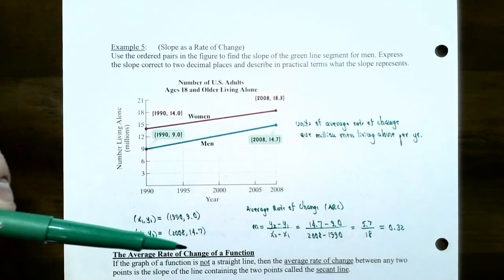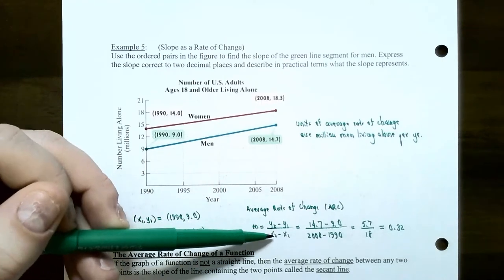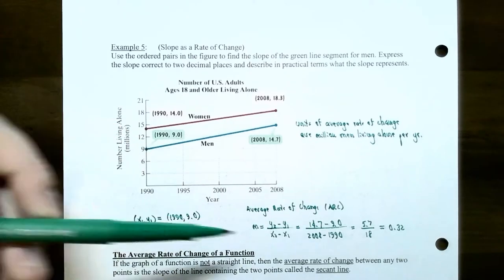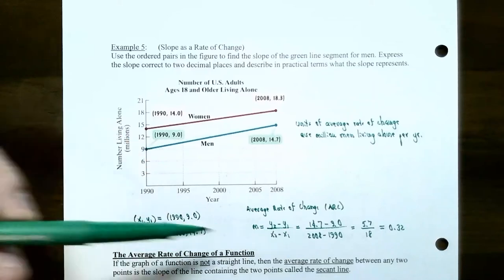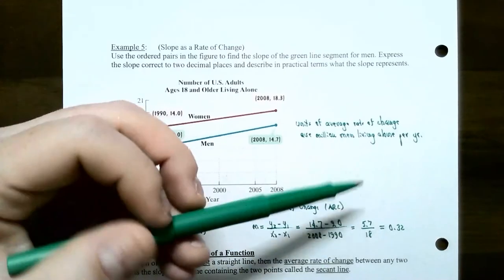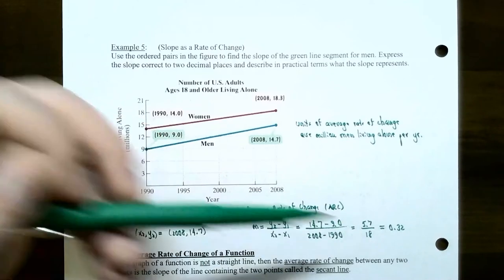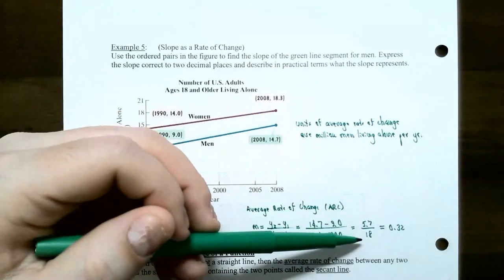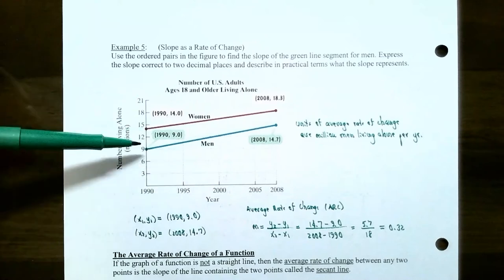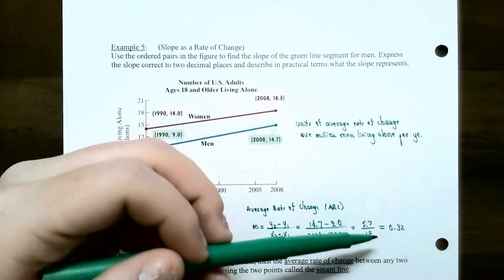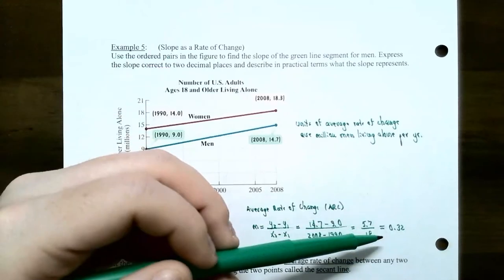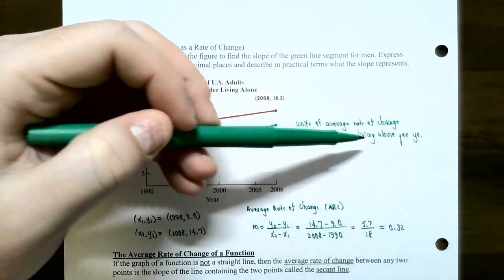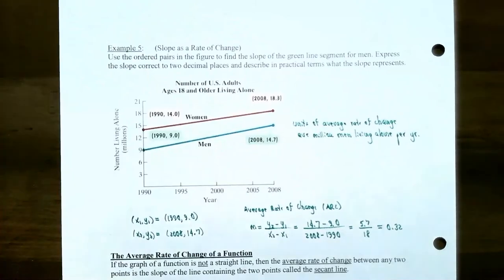Using the slope formula — y2 minus y1 over x2 minus x1 — we get 14.7 minus 9.0 in the numerator, and 2008 minus 1990 in the denominator. The numerator is 5.7, meaning there were 5.7 million more men living alone between 1990 and 2008. The denominator is 18 — an 18-year span. Rounding to two decimal places, you get 0.32 million men living alone per year.